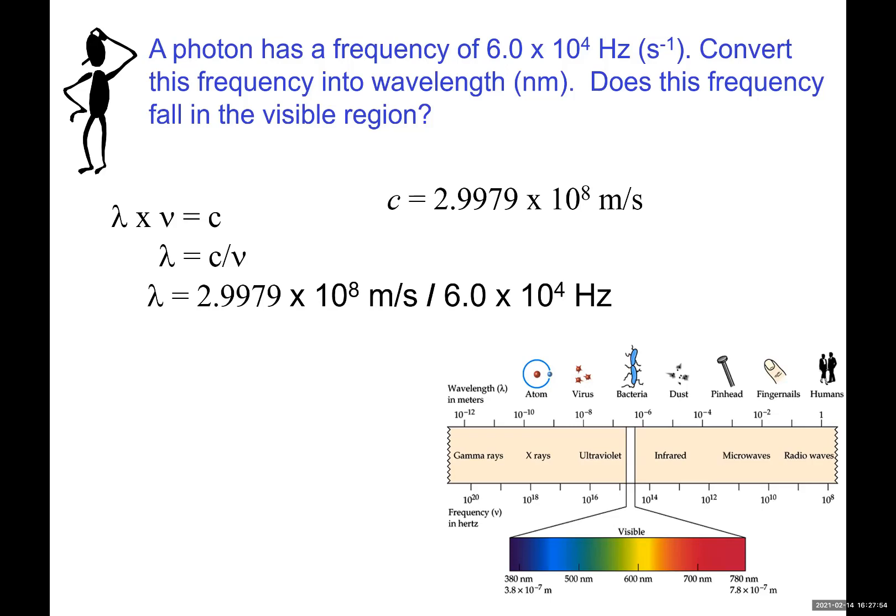Then plug in the numbers. The problem says speed of light is given already. I plug it in the top for c. Frequency is given to be 6.0 times 10 to the power of 4 Hertz. Hertz is the same as per second. Number of vibrations per second is called Hertz. If you plug in these numbers, use your calculator, you should get the wavelength in meters.